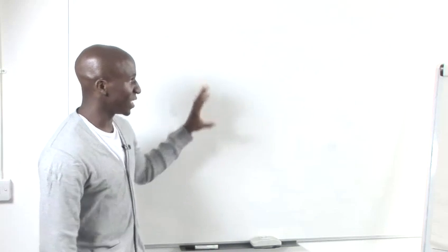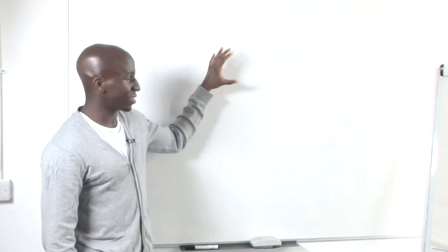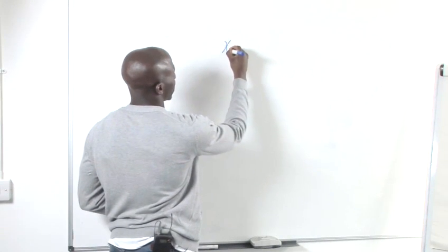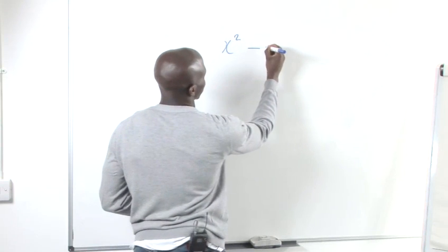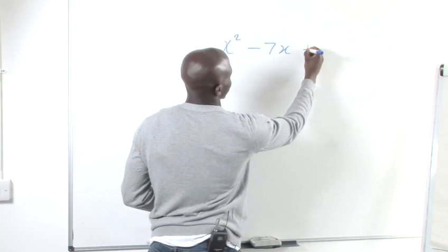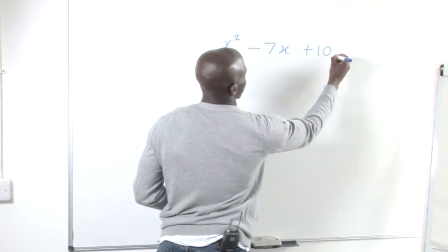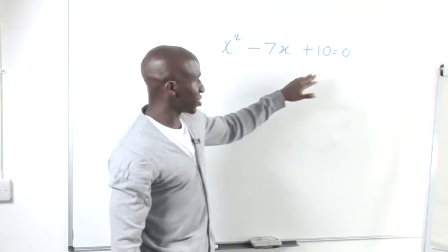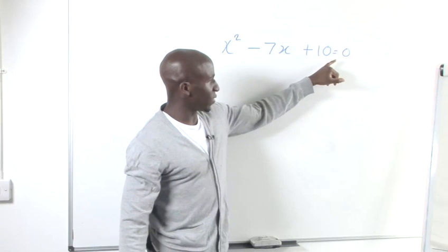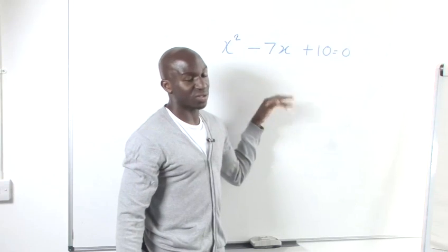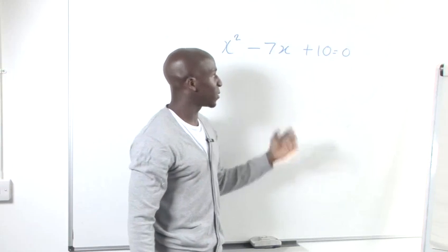The first thing we want to do is establish our quadratic equation. The equation that I'm going to bring is x squared minus 7x plus 10 and that equals 0. So we're not actually going to go to the lengths of finding the solutions. We're only going to factorise so you can see where the solutions lie.